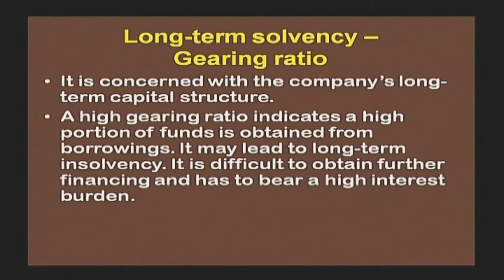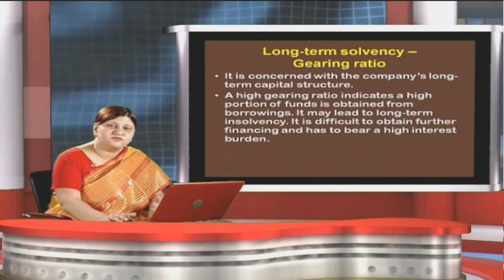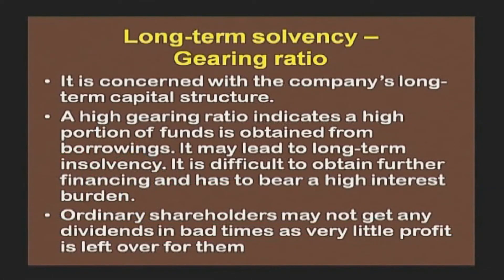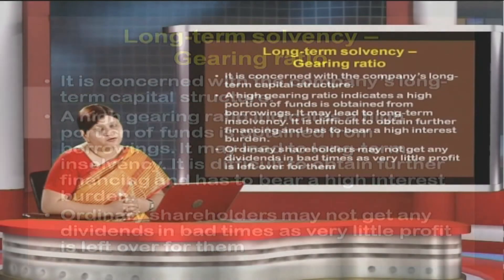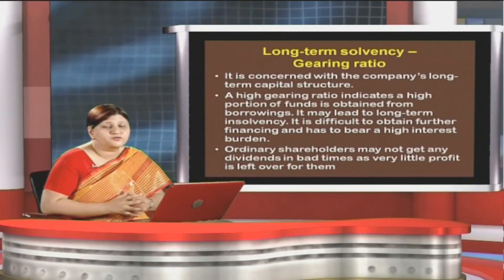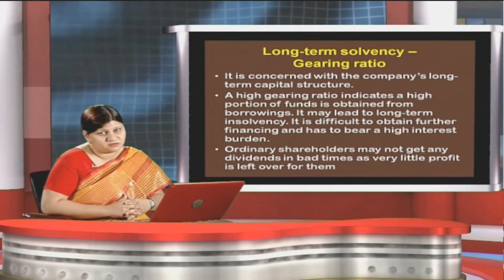A higher gearing ratio indicates a higher portion of funds is obtained from borrowings. It may lead to long-term insolvency, it is difficult to obtain further financing, and the company has to bear a high interest burden. In the long term, the prospect of earning profits may go down because borrowings are higher, so interest charges will be higher. Ordinary shares may not get any dividends in bad times, as very little profit is left over for them, resulting in lesser return on equity.